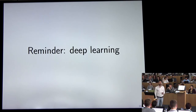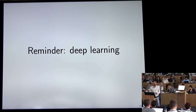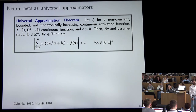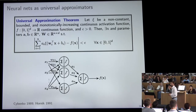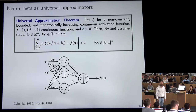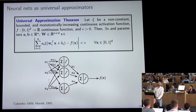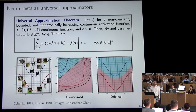Let me briefly remind you about deep learning. Deep learning is not very deep in the sense that there is the universal approximation theorem, which tells you that a class of functions realizable as a neural network with one hidden layer is dense in the set of continuous functions. Basically, you can represent with any accuracy any continuous function with just one hidden layer — neural networks are universal approximators, and in theory you can train them to learn anything.